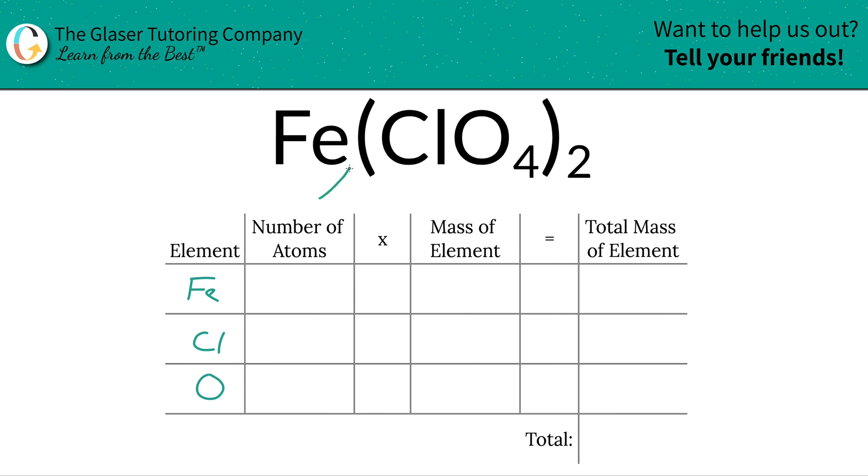Then I'm going to write down the number of atoms of each. That's where the subscripts come into play. So if there isn't a subscript at the bottom of the element, like for iron, we assume it's a 1.